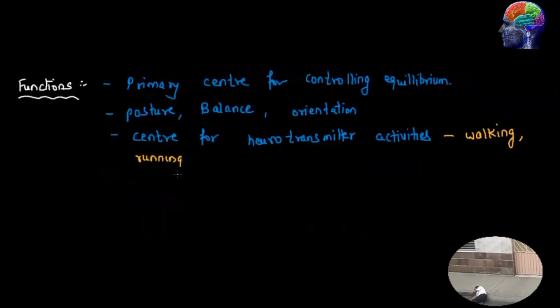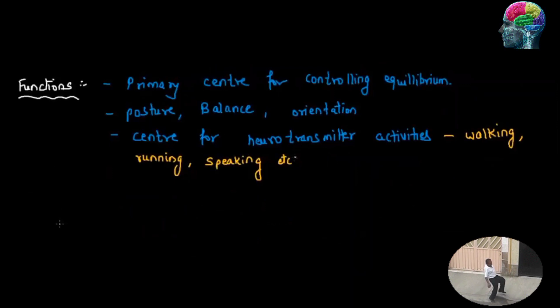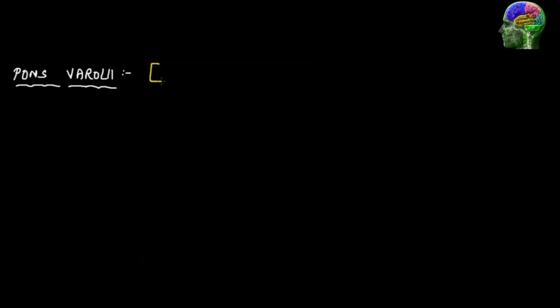Cerebellum is the center for neurotransmitter activities like walking, running, and speaking. The cerebellum is considered the negative part of the brain — if you see a 100 rupee note on the ground, the impulse to pick it up is controlled by the cerebellum, while leaving it because it doesn't belong to you is controlled by the cerebrum.